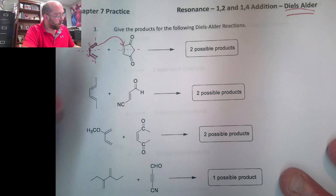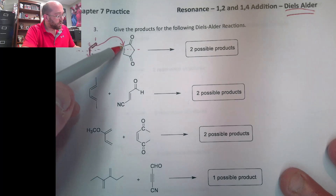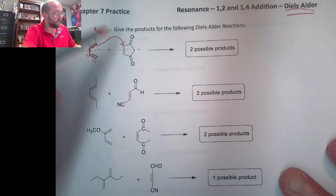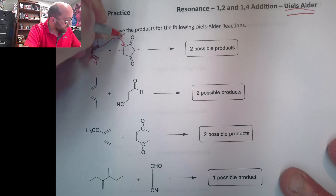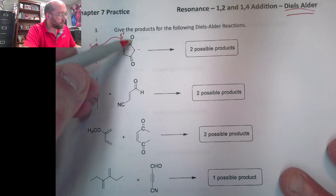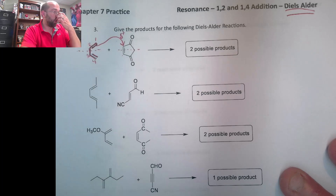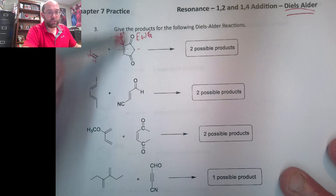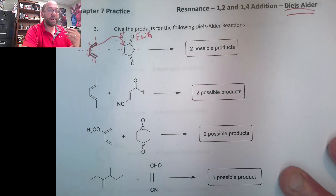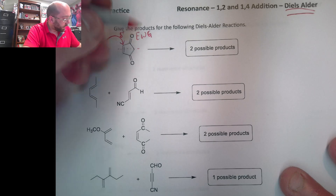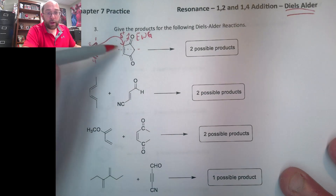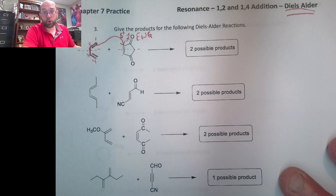Once this attacks, the issue is: why does it attack here in particular? Because this carbon is technically partial positive, just like this one. And it's because this carbonyl acts as what we call an electron-withdrawing group. So the oxygen is pulling electron density away from this carbon — pulling the electron density away from that carbon — so that's why it's slightly partial positive.